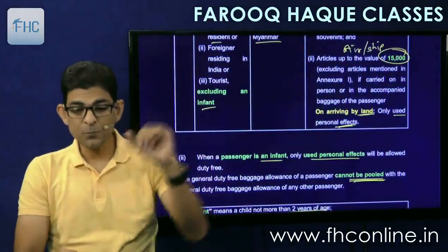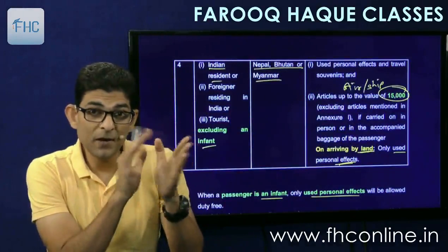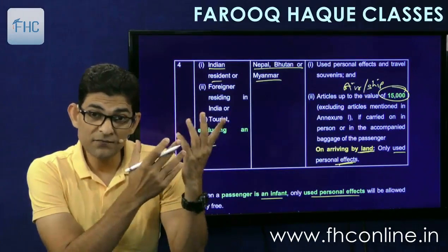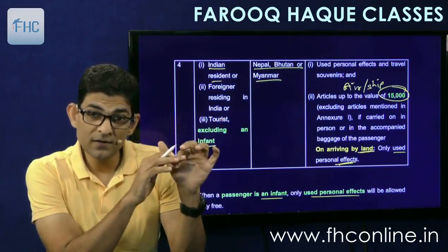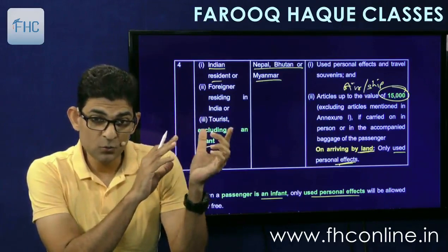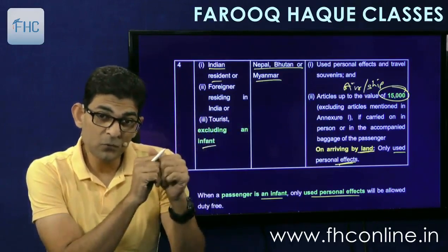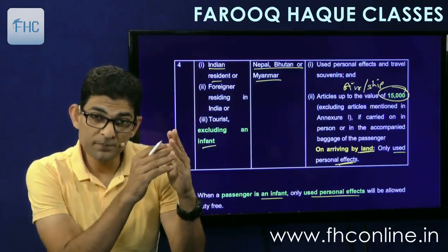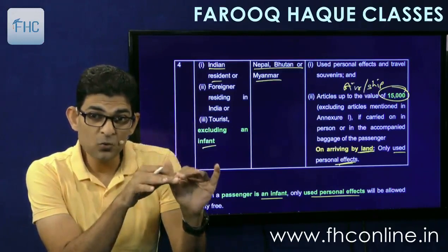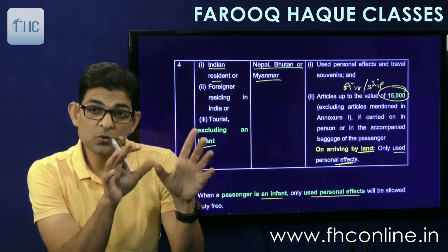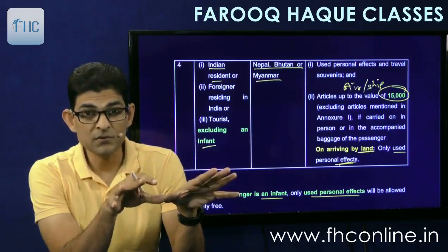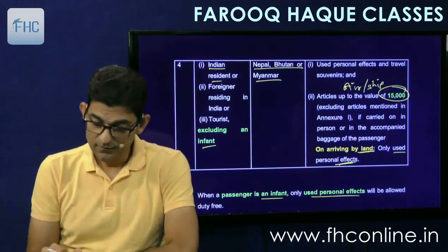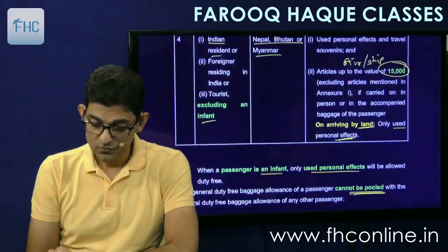Regarding Nepal, Bhutan, and Myanmar: when Indian residents, foreigners residing in India, or Indian tourists come from these countries, the exemption is allowed only up to 15,000 rupees if arriving by air or ship. If coming by land route from these places, only personal-use items are allowed — no goods exemption. This has to be kept in mind.